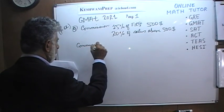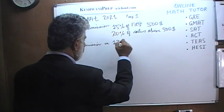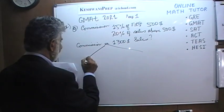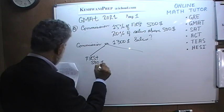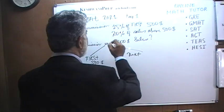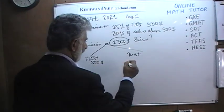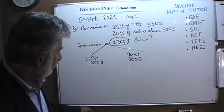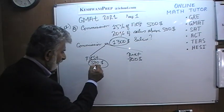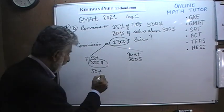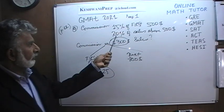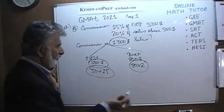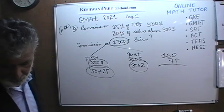For the first $500 at 15%: 10% of 500 is $50, and 5% of 500 is $25, so 15% gives $75. For the remaining $800 at 20%: 10% of 800 is $80, so 20% is $160. The total commission is $160 plus $75, which is $235.